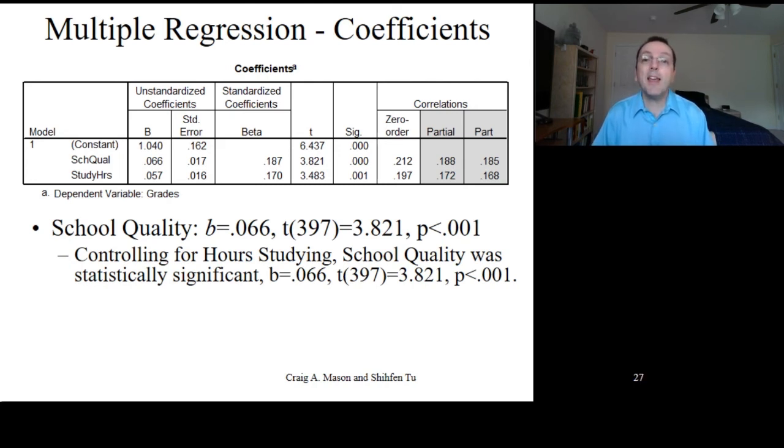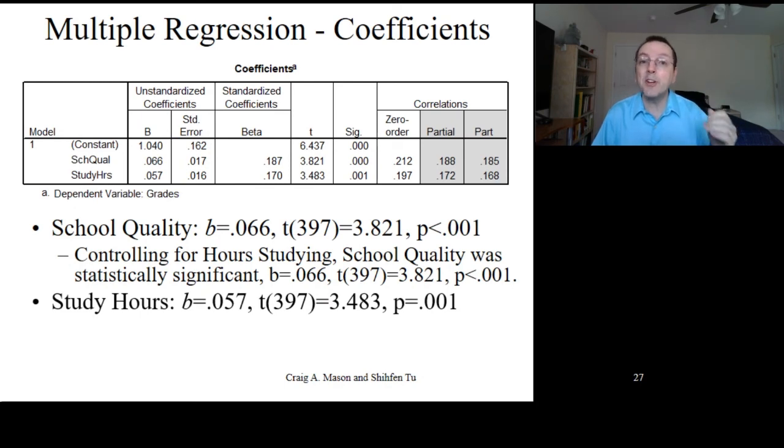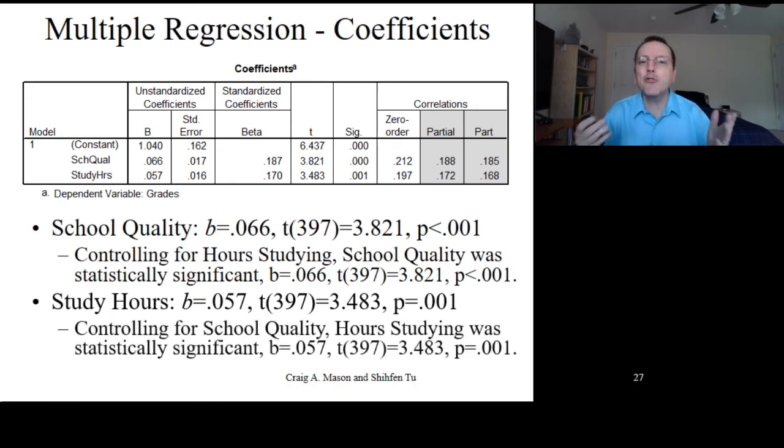For study hours, the regression coefficient was b equals 0.057, with t with 397 degrees of freedom equal to 3.483, and the p-value equal to 0.001. You could report this in the paper by saying controlling for school quality, hours studying was statistically significant, followed by the regression coefficient, the t statistic, the degrees of freedom, and the p-value again. Again, make sure to include all that information.